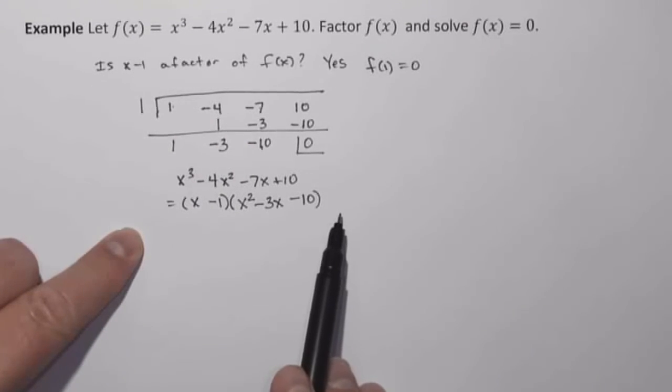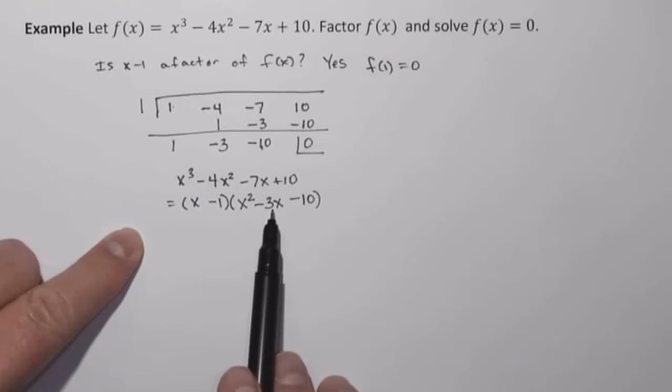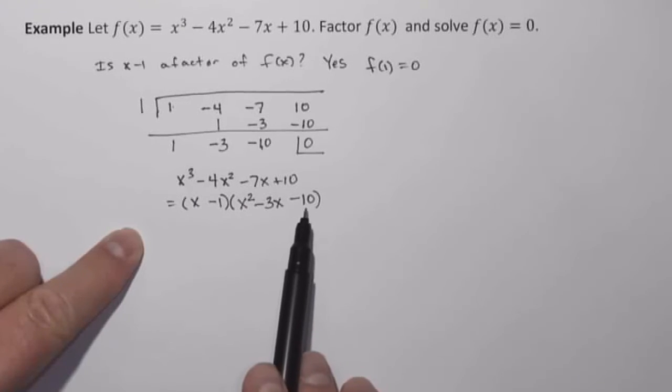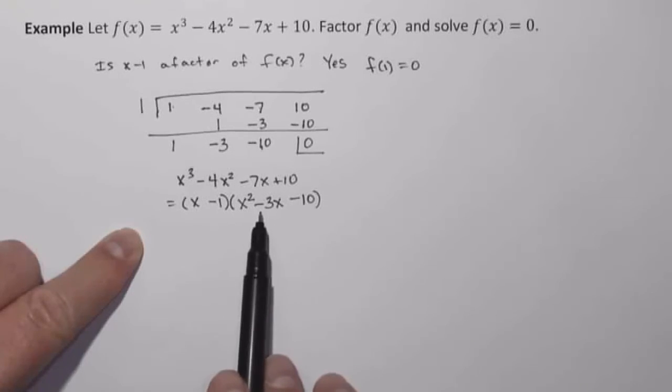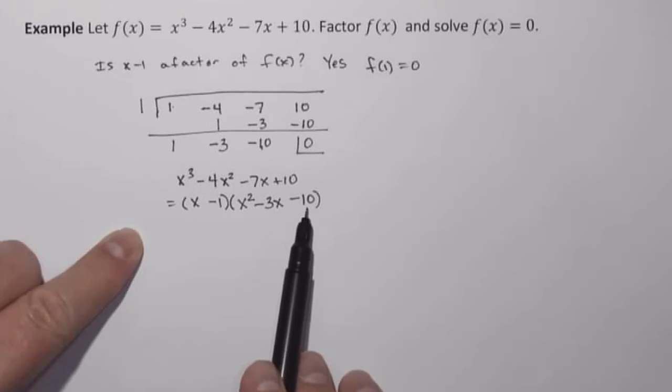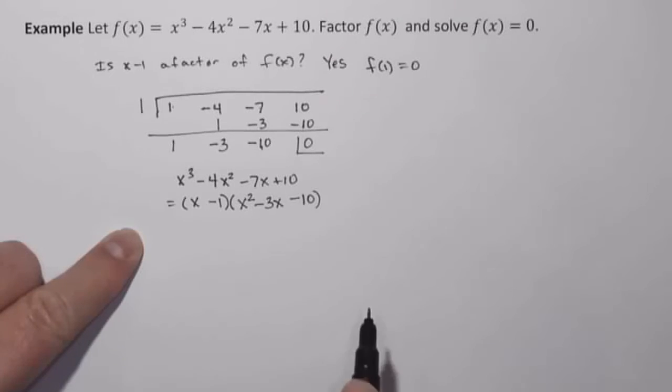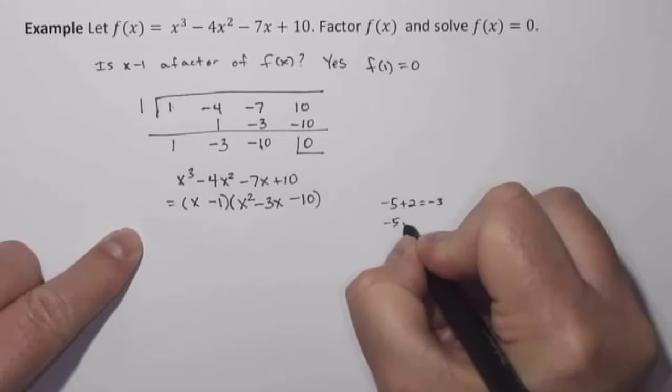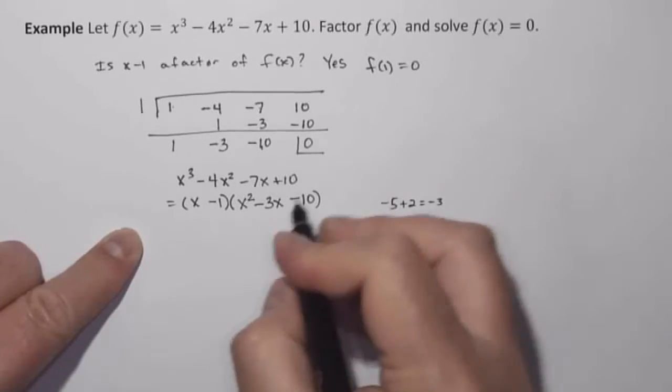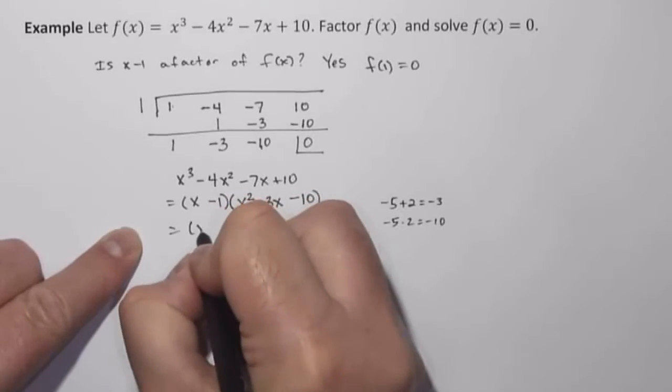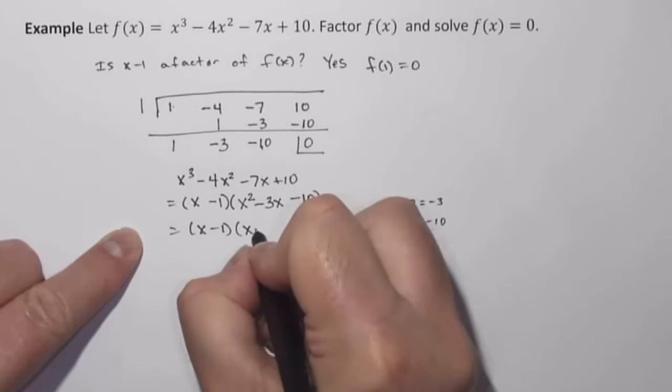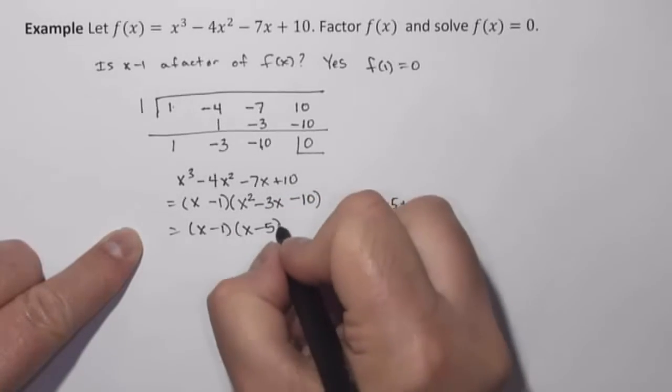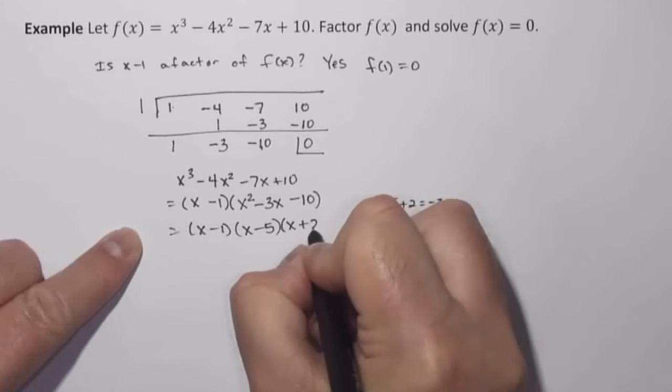And so now I can continue factoring. Looking at x squared minus 3x minus 10, can we factor that? Well, look at the negative 10. I need two numbers that multiply together to be negative 10 that add together to be negative 3. And so negative 5 and positive 2 will do that. Negative 5 plus positive 2 equals negative 3. Negative 5 times positive 2 equals negative 10.